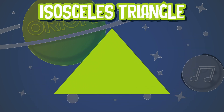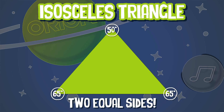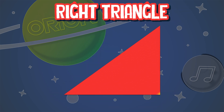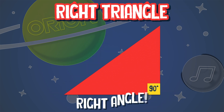The isosceles triangle has only two sides of equal length. For example, a triangle with a 50-degree angle has two 65-degree angles. The right triangle has one right angle on its side.